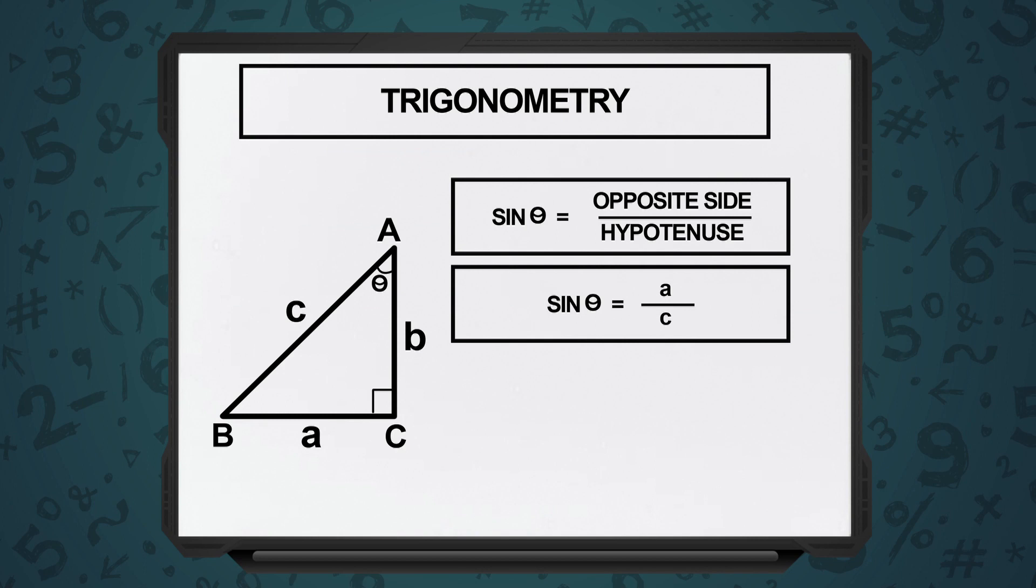Sin theta is opposite side upon hypotenuse. So you can say sin theta is equal to A divided by C.